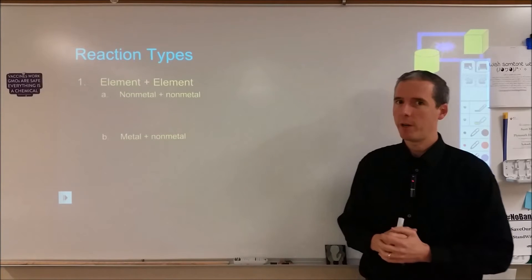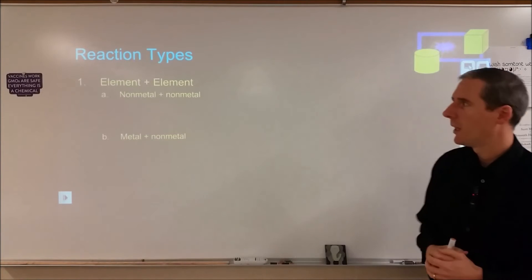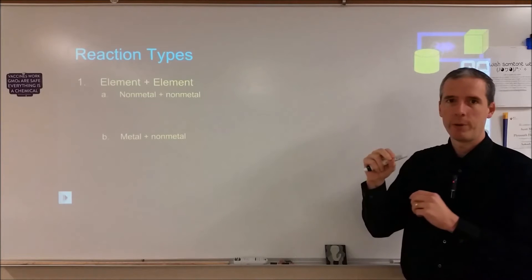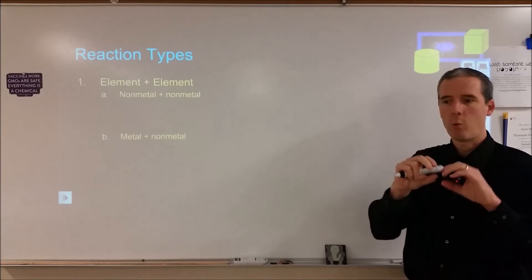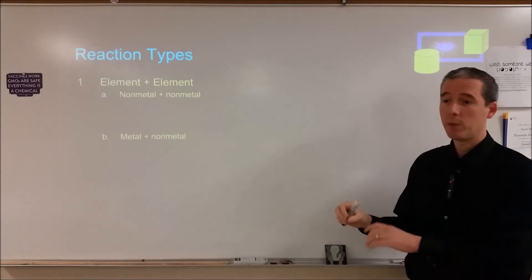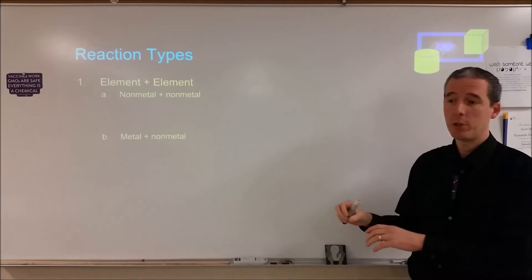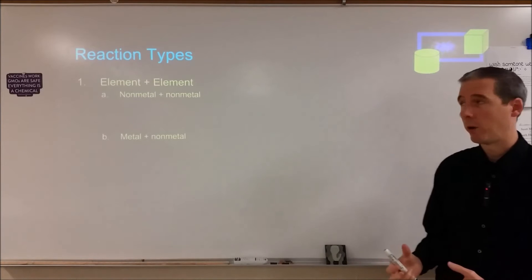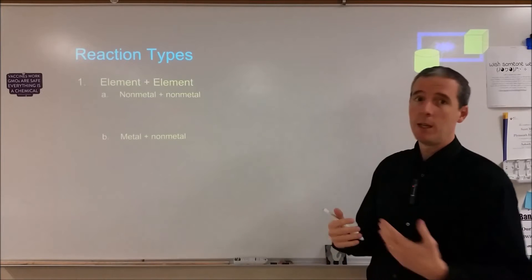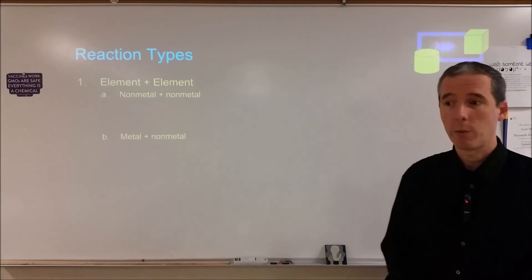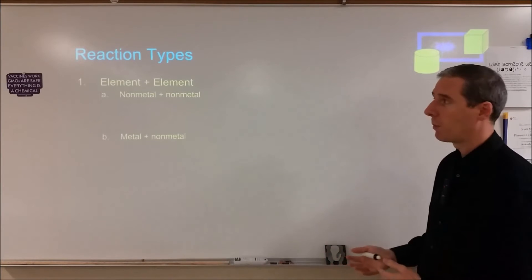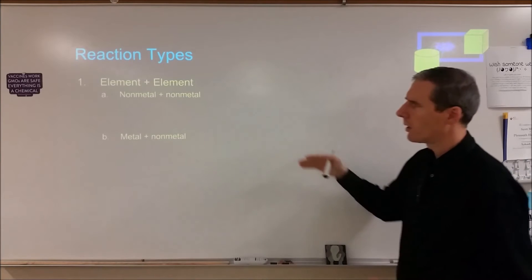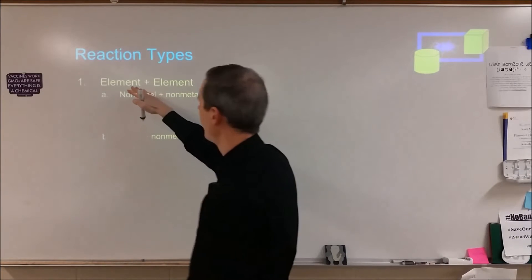Starting chemical reactions can be very overwhelming from the beginning. What we're going to do is go through and look at what you start with and how that implicates what type of reaction you might have and what products you'll form. The goal is that by the end, just by looking at the reactants, you can come up with what the products are. To do that, we're going to go through a couple of different scenarios.